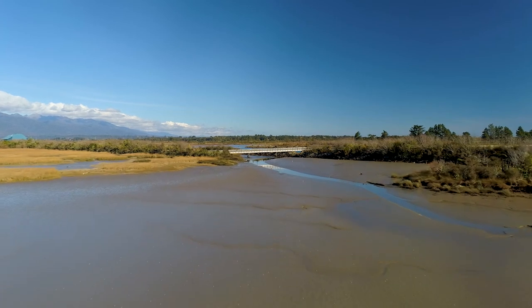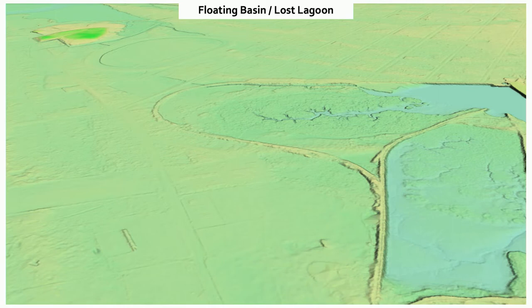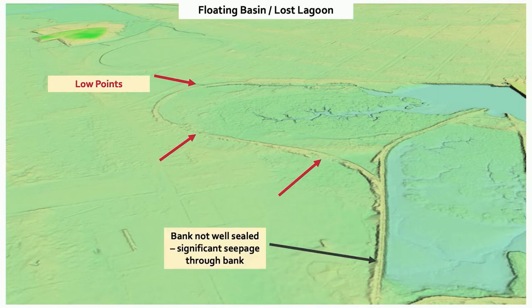This next slide highlights some of the low points and overtopping areas around the floating basin, as well as the risk for inundation at the Lost Lagoon. The shaded relief map — a coloured digital elevation model — shows the existing stop bank, with red arrows highlighting existing low points. During the February events, sandbags were placed in these low points because they were potential overflow points. The existing bank running along the Lost Lagoon is no longer very well sealed — it's very porous, with seepage coming through during high tides and definitely during a flood. That's something we're hoping to address in the future.